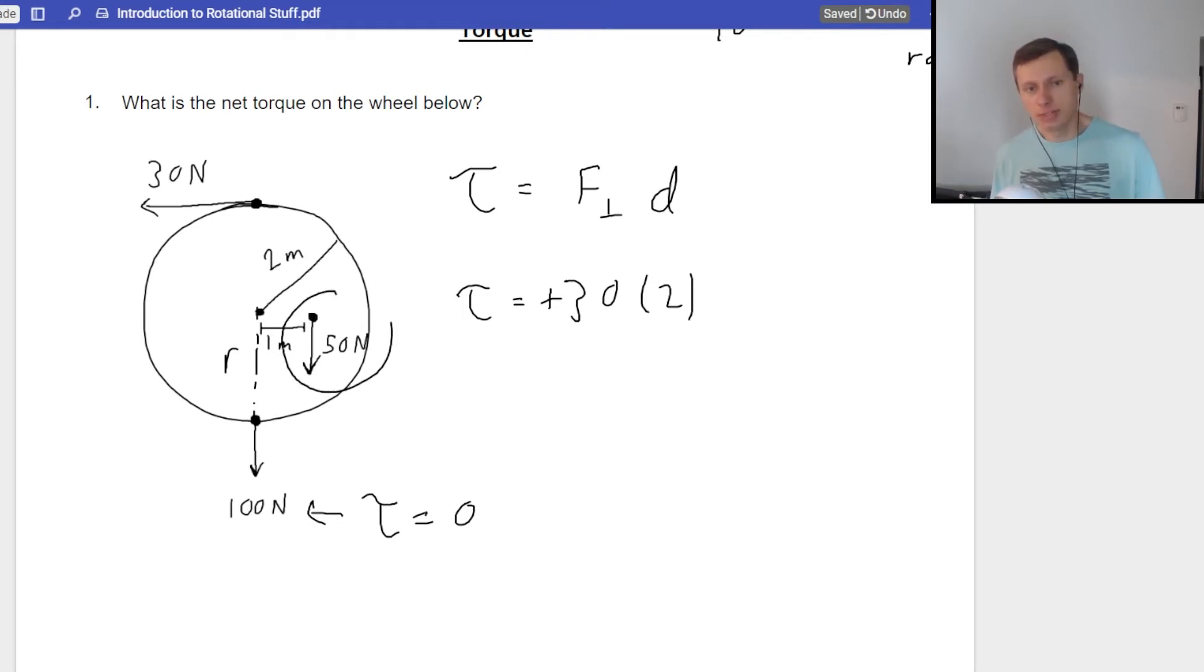Now, for the last one, our 50 newton force. So, for the 50 newton force, first of all, I'll just tell you it is perpendicular. Perpendicular to what? Perpendicular to the radius, right there. There's our 90 degree angle. Perfect. And now I need to say that torque is equal to the force, which is 50, times the radius, which in this case, it's only located one meter away. It's not two meters. It's one meter away.